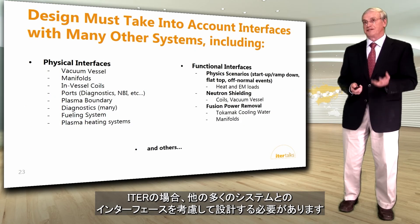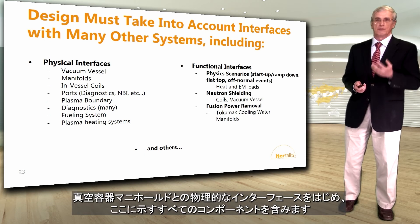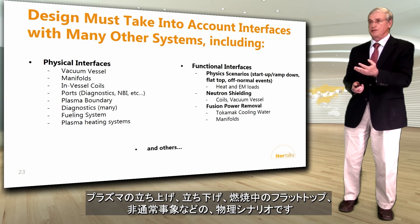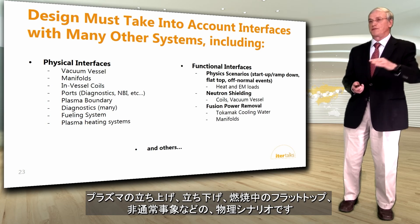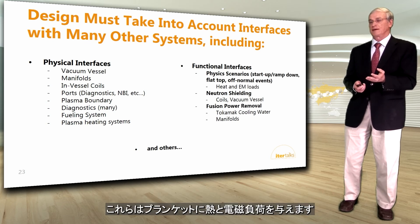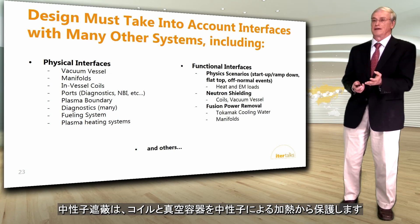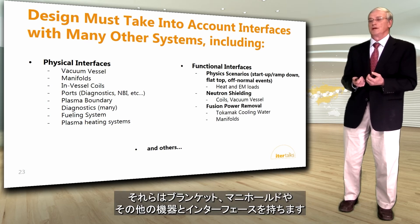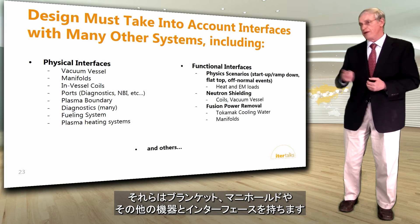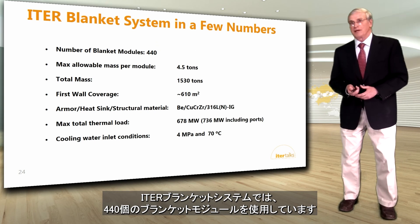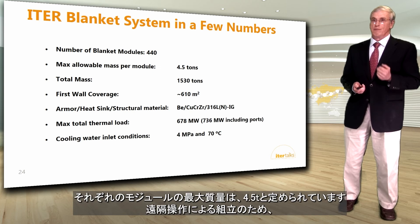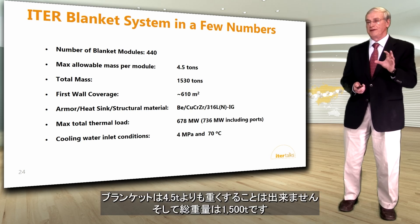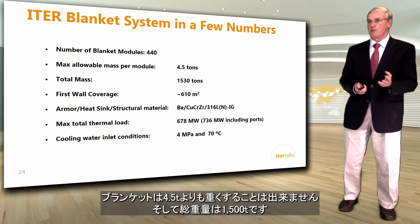The ITER blanket design must account for interfaces with many systems, including physical interfaces with the vacuum vessel and manifolds, functional interfaces with physics scenarios for plasma startup and ramp-down, flat-top burn creating heat and EM loads, neutron shielding to protect coils and vacuum vessel, and the tokamak cooling water system. In key numbers: there are 440 blanket modules in total; the maximum allowable mass per module is 4.5 tons based on remote handling requirements, giving a total mass of about 1,500 tons.